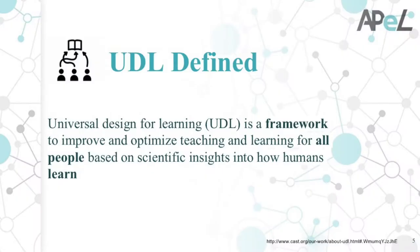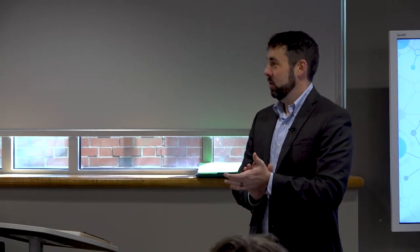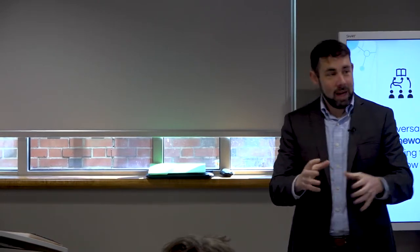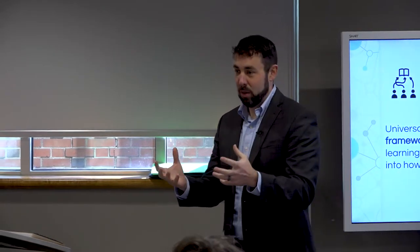Our operational definition, from their website: Universal Design for Learning (UDL) is a framework to improve and optimize teaching and learning for all people, based on scientific insights into how humans learn. For the natural scientists and positivist folks out there — this is based on learning science, cognitive science, and neuroscience. We're not going to get into the depths of the science today, but we are going to get into the application, so this is built on something solid.